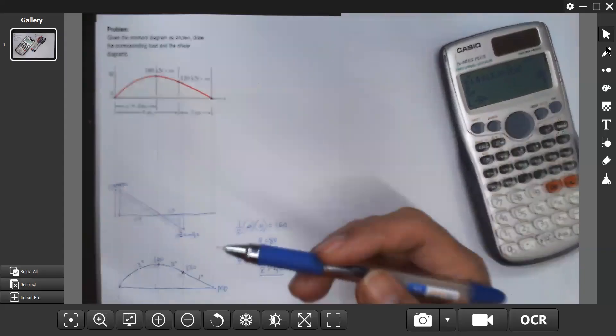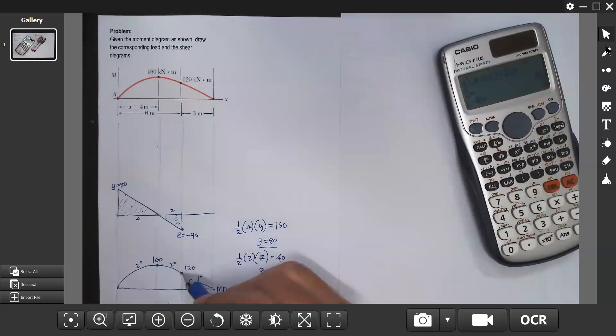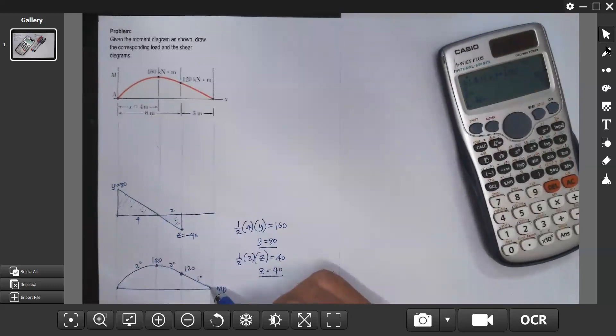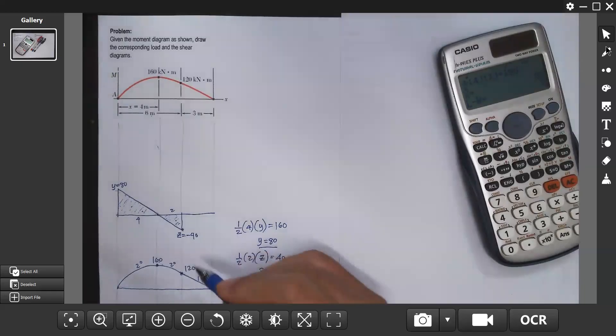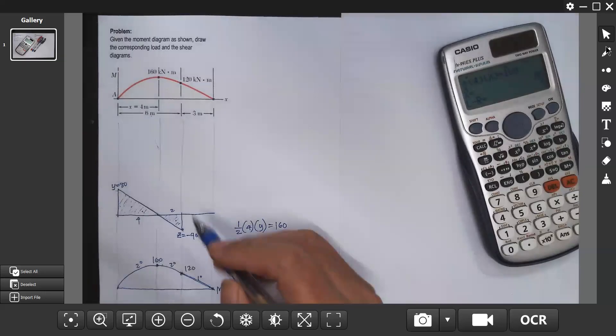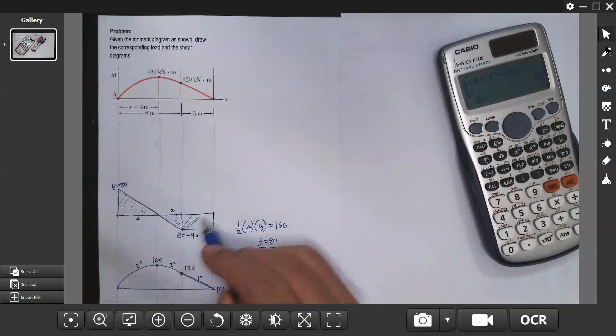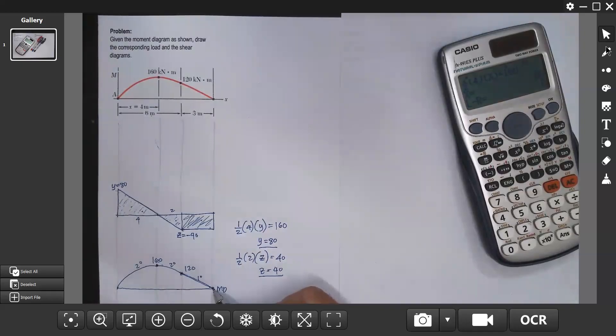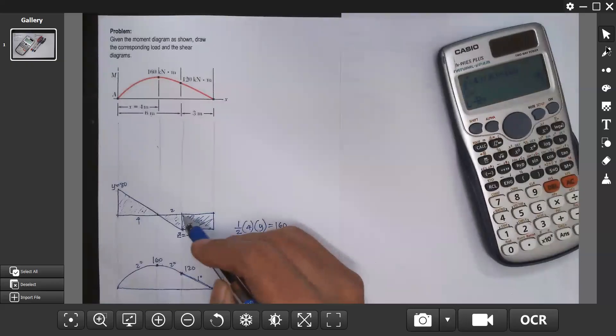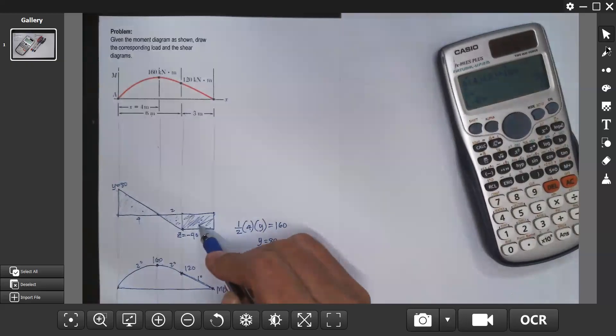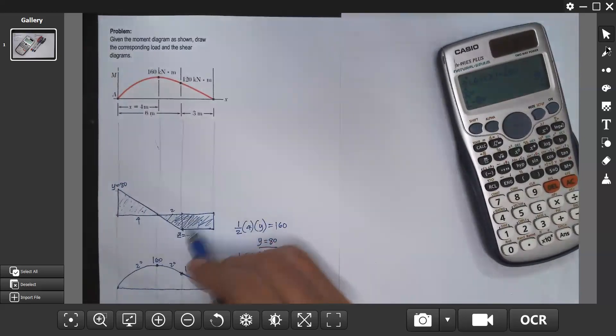From this point to this point, straight line, which means the shear diagram is horizontal and negative, from 120 to 0. If we assume this is 40, let's confirm. The area is equal to the decrease in moment. From 120 to 0, it decreased by 120. The area is 40 times 3, which is 120. So it's consistent.